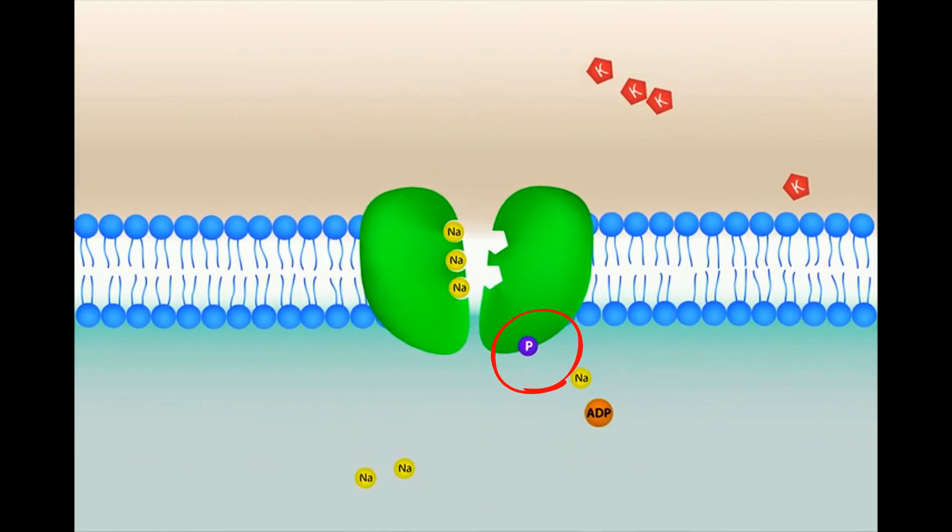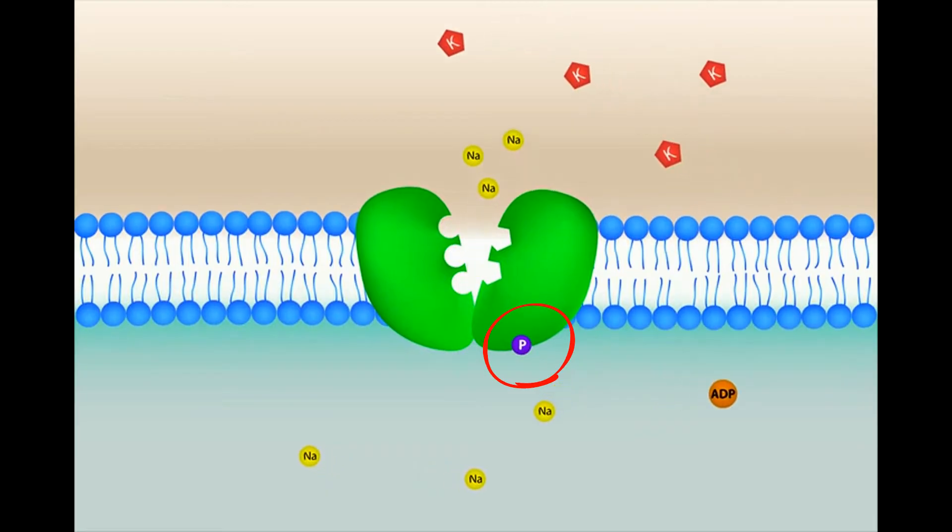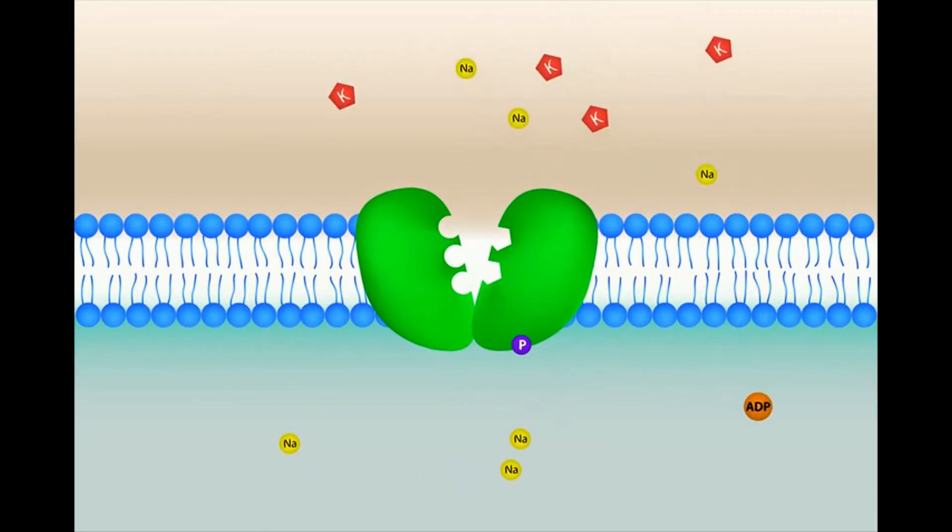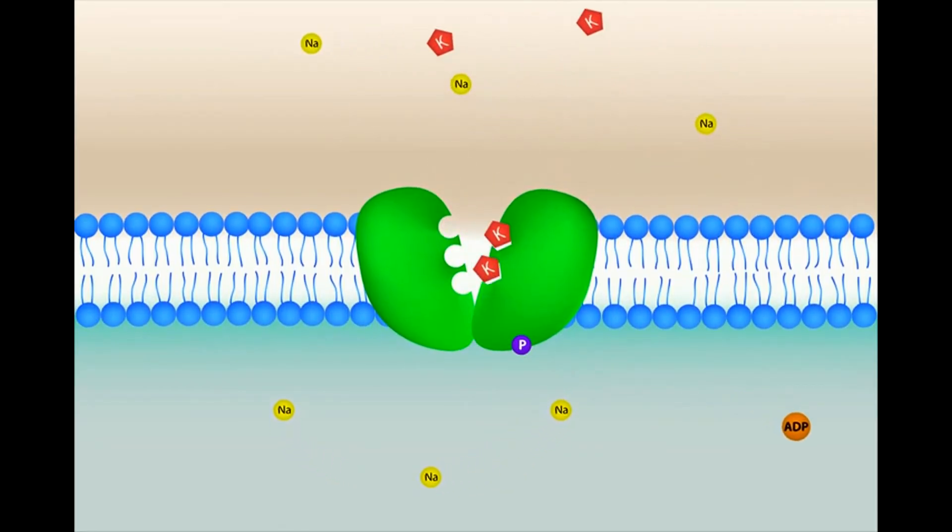This phosphate bonds to the carrier protein which causes it to change its shape. The new shape releases the three sodium ions outside the cell.